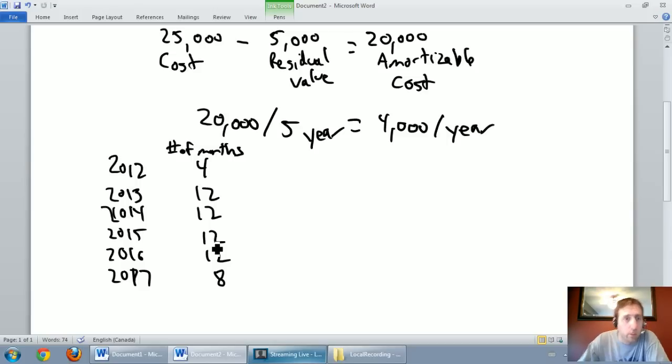In 2012 we're going to own this asset for four months. We've said the amortization rate is $4,000 a year. Let's calculate our amortization under straight line for 2012. The math is very easy. It would be $4,000 a year but we're not dealing with a full year, we're dealing with 4 twelfths of a year. So 4,000 times 4 twelfths - I'm just going to quickly calculate this - 4,000 times 4 divided by 12 is 1333, and I'm just going to round to the dollar here.